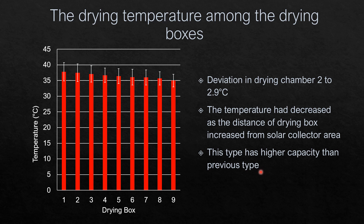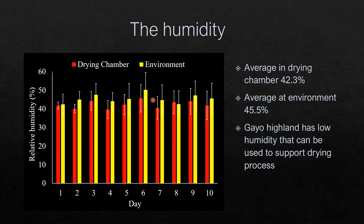We can conclude that this design can be used in Indonesian climate. The second important factor to support the drying process is humidity. The average drying chamber humidity was about 42.3 percent, while the average ambient humidity was 45.5 percent. Gayo Highland has low humidity, and the use of the solar tunnel dryer still can reduce the humidity further to support the drying process.